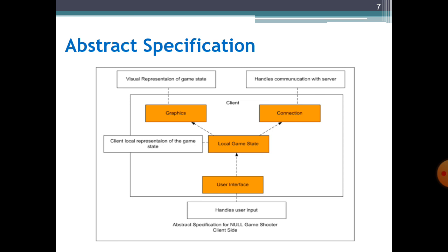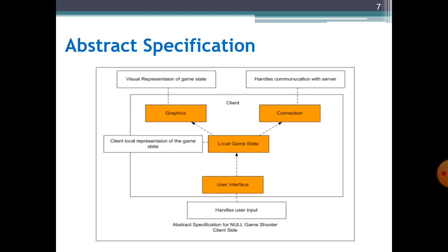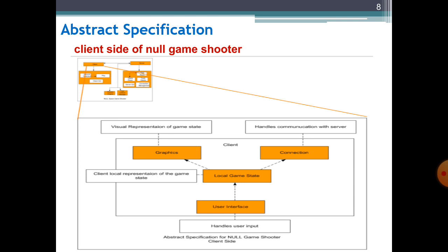Now we move towards abstract specification, which is the next activity — activity 2 — of the design process. For each subsystem, an abstract specification of the services it produces and the constraints under which it must operate is produced. Here we take the client subsystem from the last slide, and for this client subsystem we are going to provide more internal abstract specifications. Here you can see the client side of the Null Space Game Shooter, and in the upper corner we have the architecture for this client subsystem.